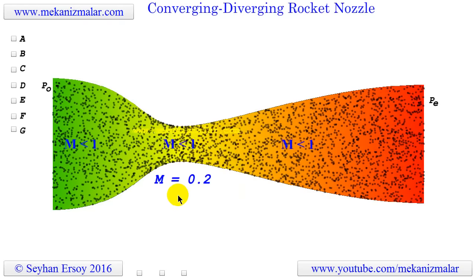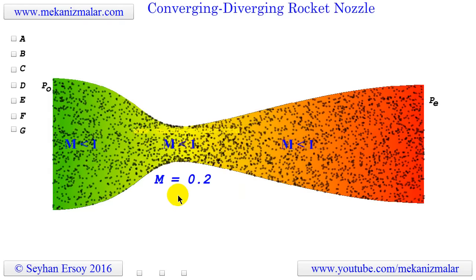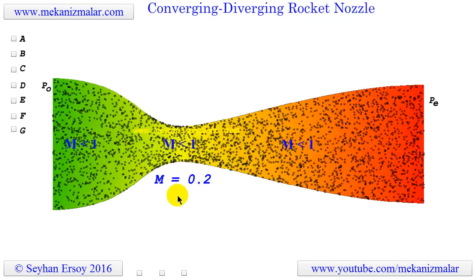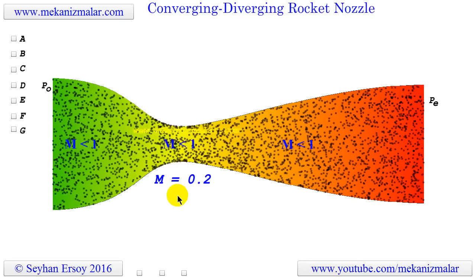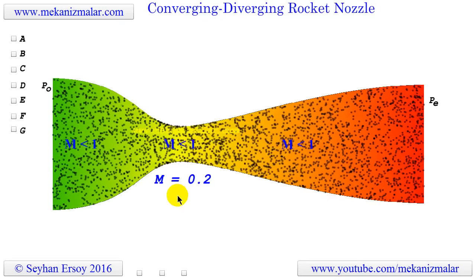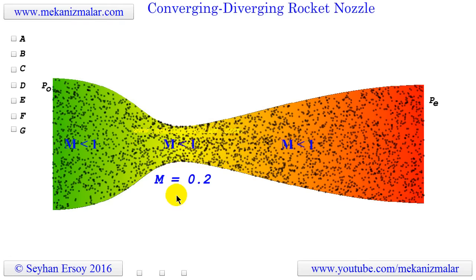Considering that the Mach number 1 is representing the speed of gas is equal to the speed of sound, the different supersonic or subsonic gas flow speeds can be expressed by a Mach number.